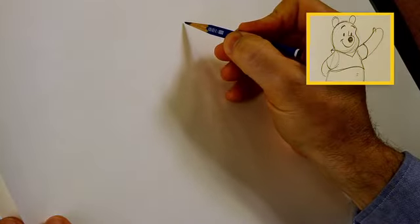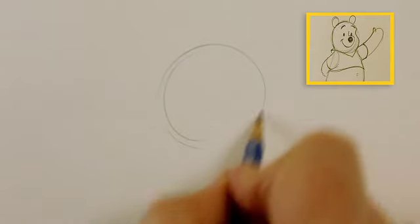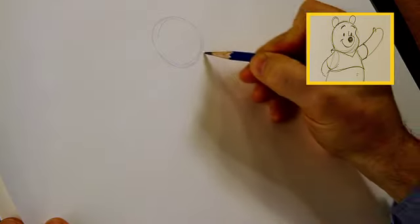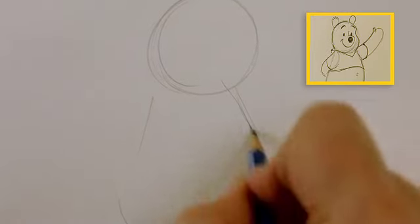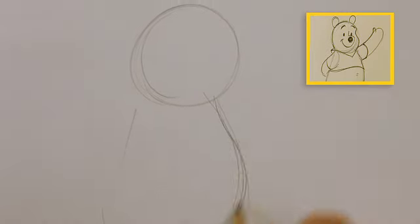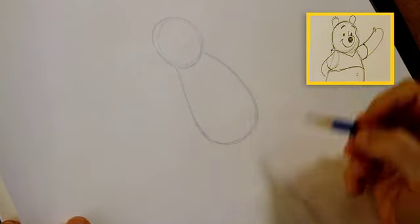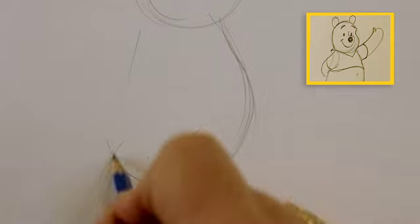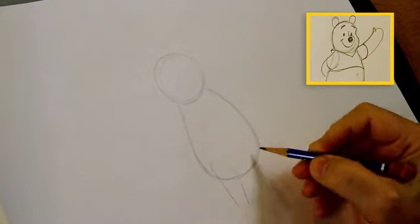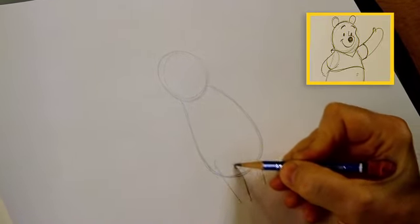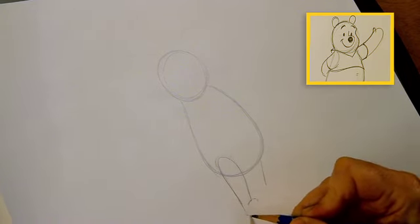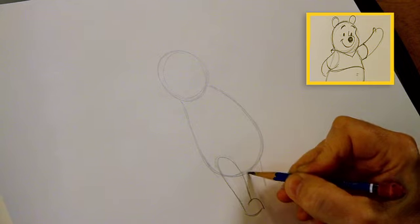All right. First, we're going to draw a circle for his head, like that. We're going to draw kind of a teardrop shape, like this. Now, Winnie the Pooh needs some legs to stand on, so we're going to add some legs, and they kind of fit up into the body here, like this. And we'll give him some feet. Have to have feet to stand on.